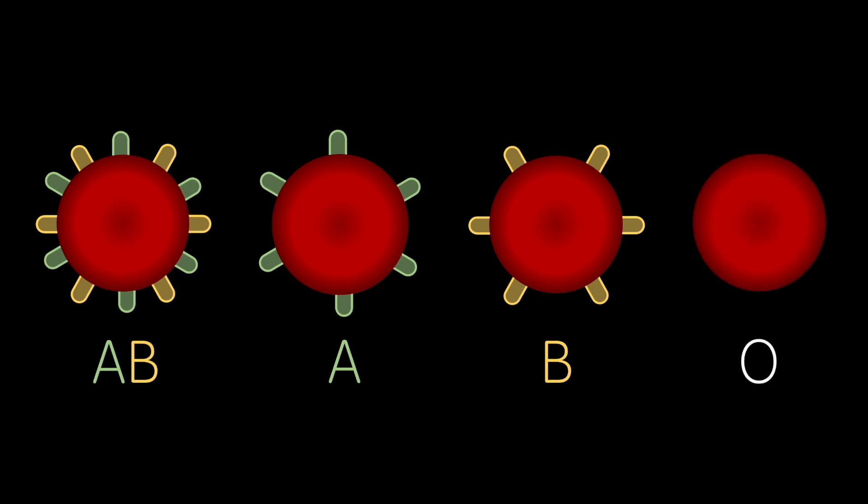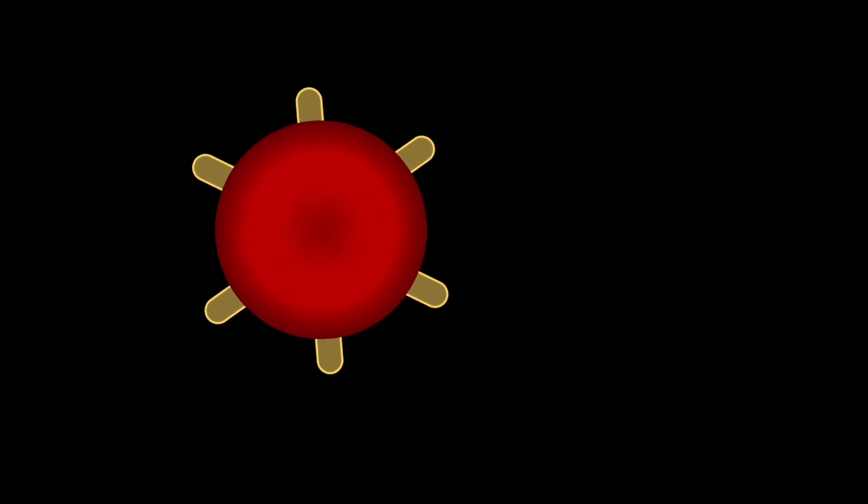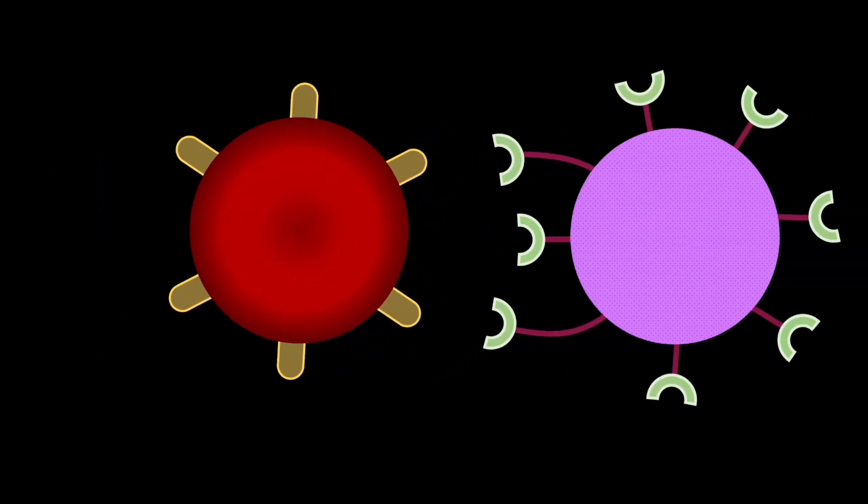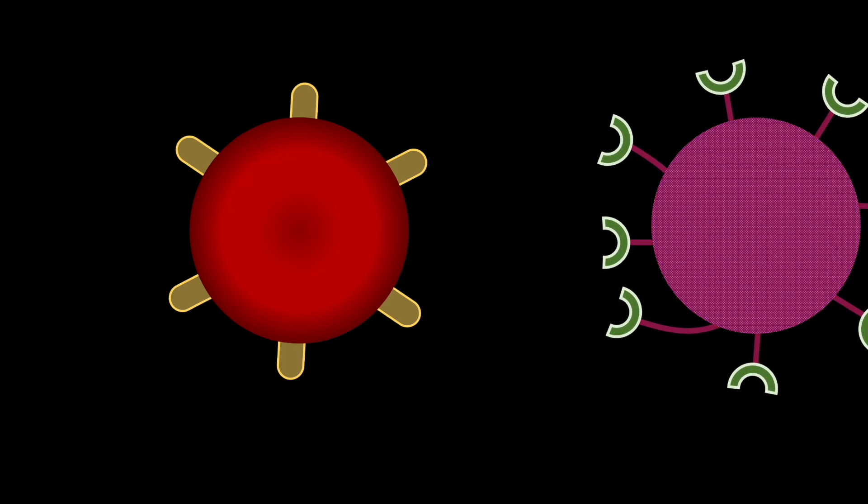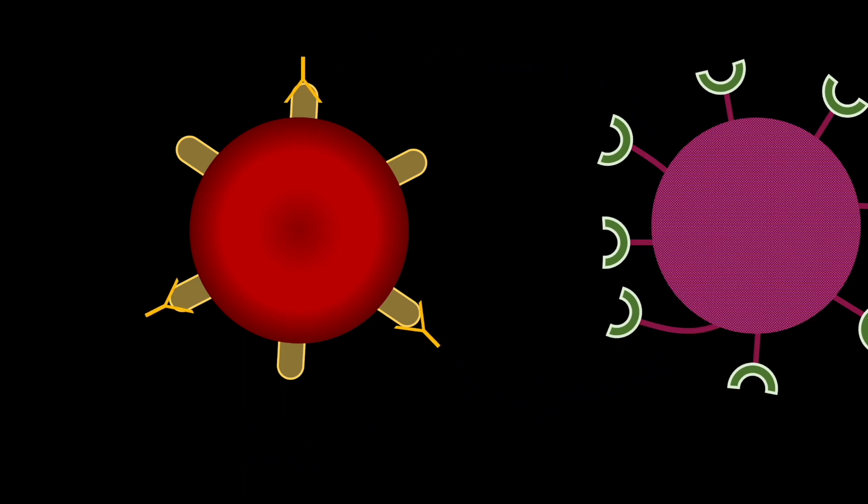The reason we recognise these different blood types is because some are not compatible for donation with other types. For example, if a person with type A blood receives a transfusion from a type B donor, then their white blood cells will identify the B antigens as foreign and produce antibodies against them, causing the immune system to attack.